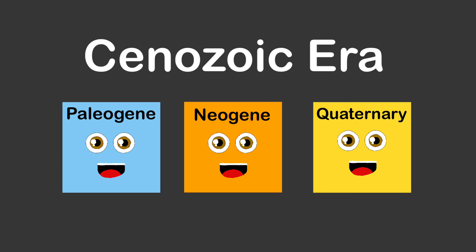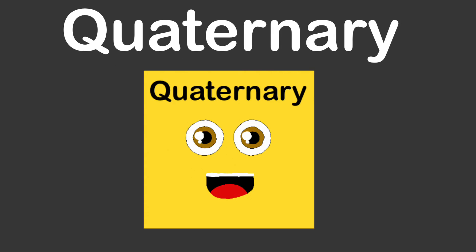I'm the Quaternary period, the current period and the most recent of the Cenozoic Era. I follow the Neogene period and started about 2.58 million years ago. I'm divided into two epochs: the Pleistocene and the Holocene. Q-U-A-T-E-R-N-A-R-Y is how you spell Quaternary. Peace to all of ya!